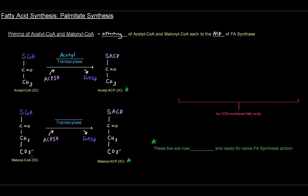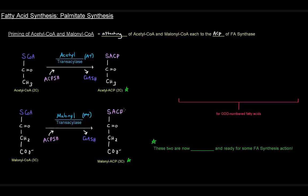The same thing happens with malonyl-CoA — we move the malonyl portion to the ACP, catalyzed by malonyl transacylase. In the fatty acid synthase video, these were called AT and MT respectively. Once we have acetyl-ACP and malonyl-ACP, we have both substrates attached to the acyl carrier protein. These two are now primed and ready for fatty acid synthesis.